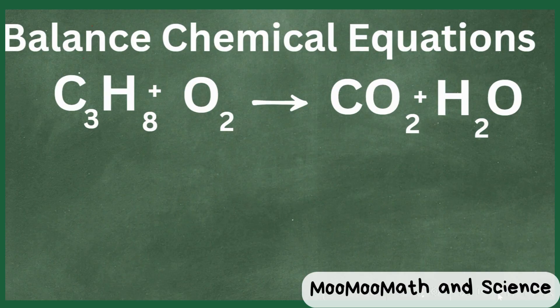So let's get started by counting atoms. We have carbon, hydrogen, and then oxygen on both sides. Carbon, then hydrogen, and oxygen.